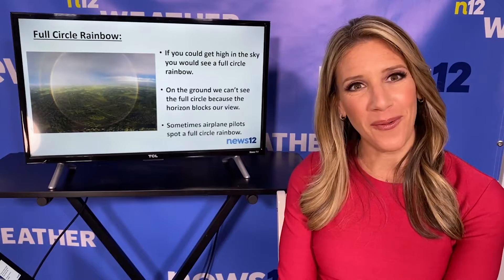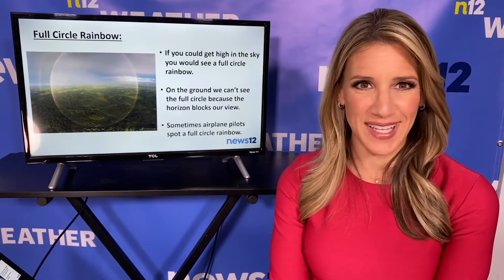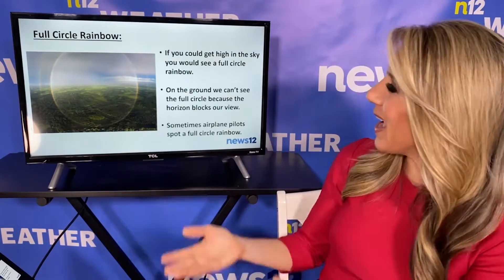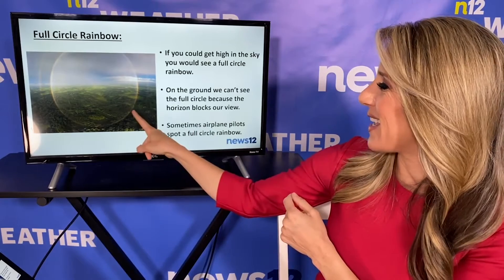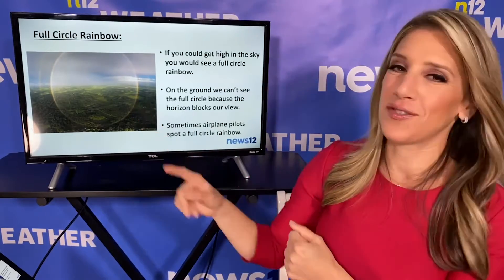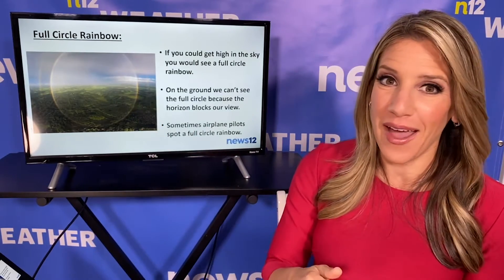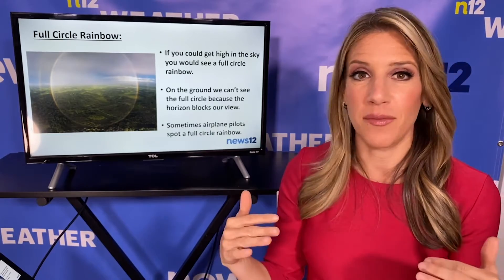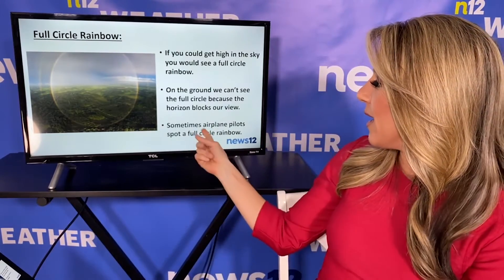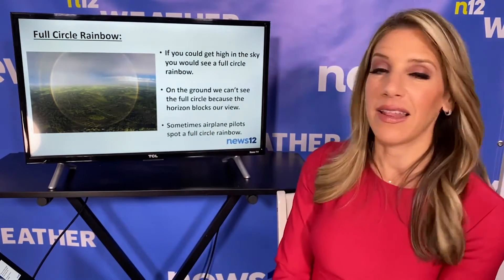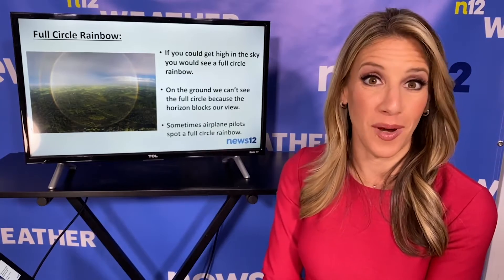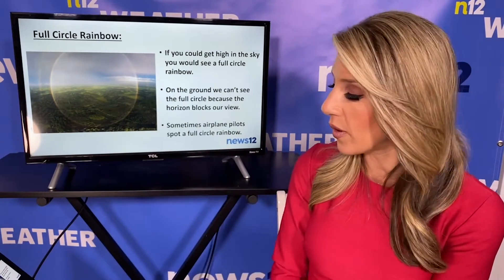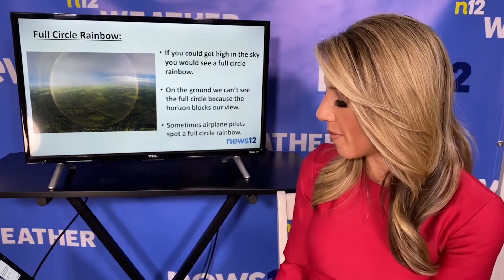A full circle rainbow — have you ever seen that? It exists, but you have to be high up in the sky to see it. On the ground, we only see half the rainbow because the horizon blocks the rest of it. Airplane pilots can actually spot a full circle rainbow sometimes if they are passing through a storm or in the right position.